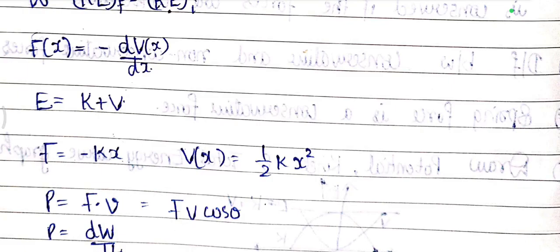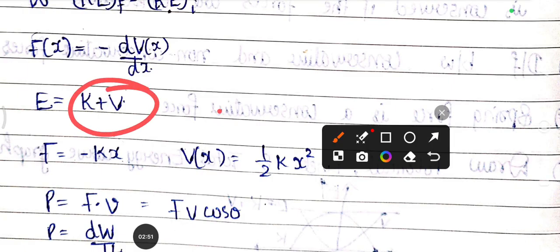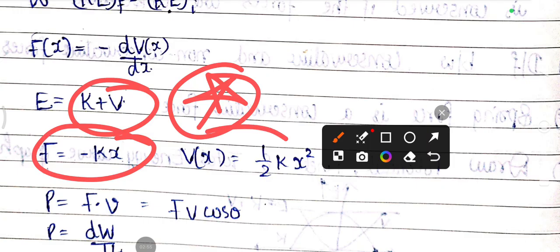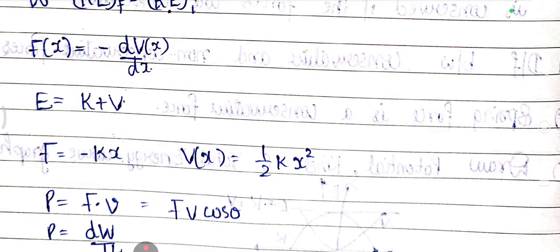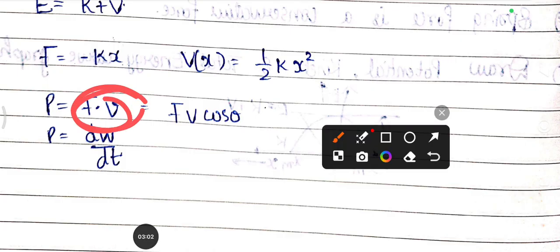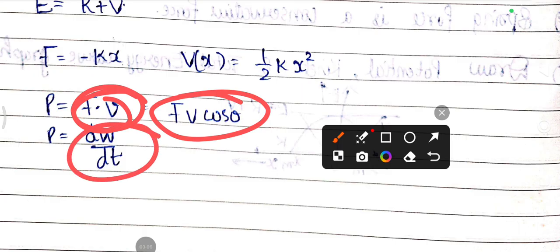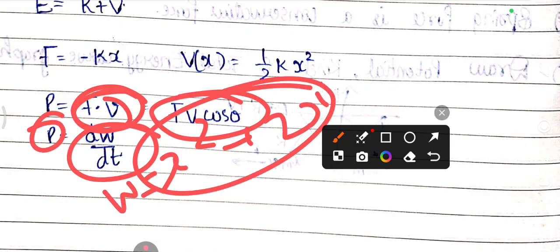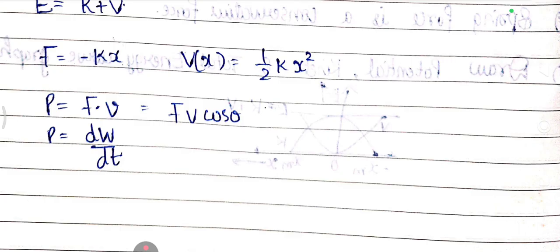Total energy equals kinetic plus potential energy. This is also an important equation. Next, F equals minus kX, spring force. This is energy stored. And power equals force into velocity, or F dot V, or F·V cos theta, or rate of change of work done. If the equation is X square plus 2X, you can find power by differentiating work done to get power.